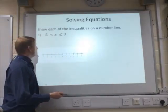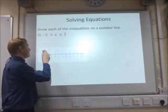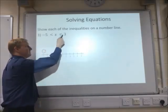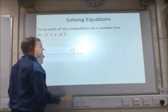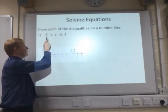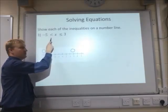The next example, similar to the first two, at -5, we put a circle. And at the 3, we put another circle. This time, we don't shade in the -5 because it's not equal to here.